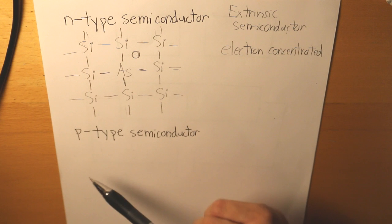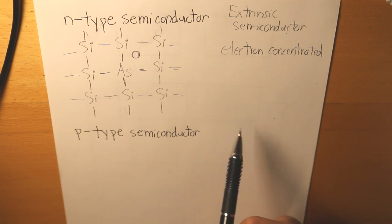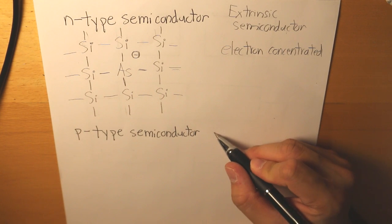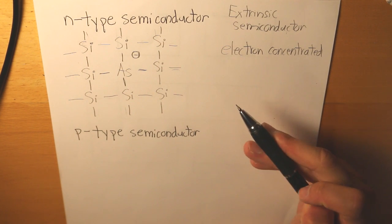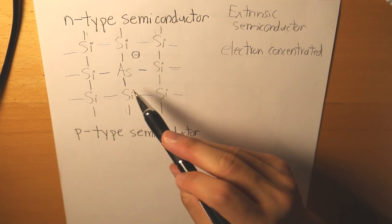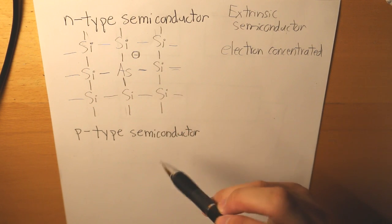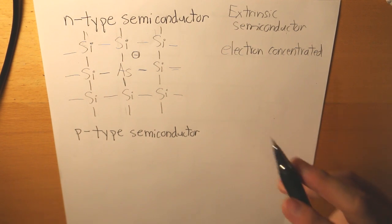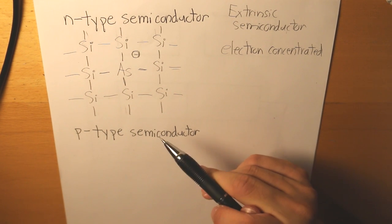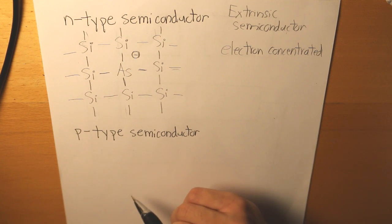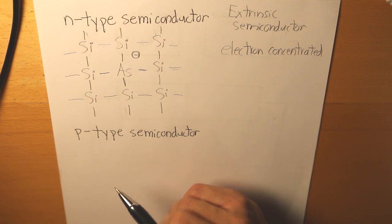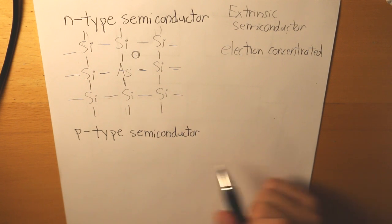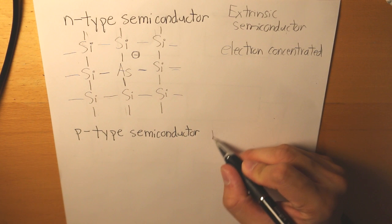Now, what happens if we do it the other way around? This time, we take an atom that has fewer than four valence electrons. That is going to create a hole in our semiconductor, making it more positively charged. This would be called a p-type semiconductor — hole concentrated.